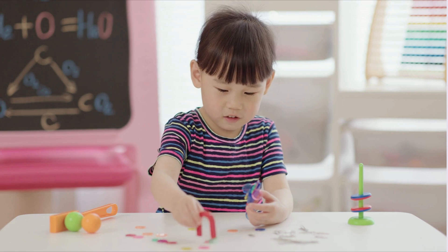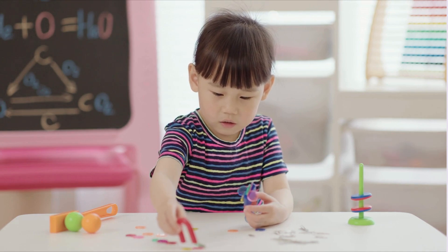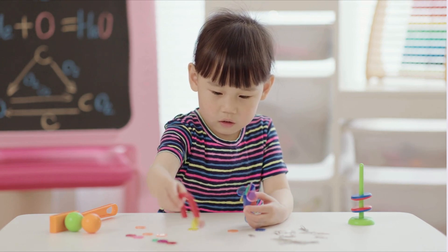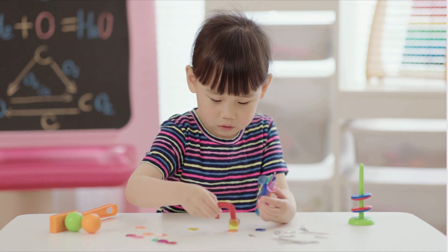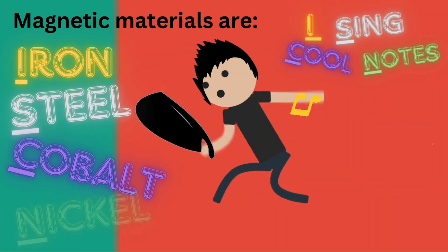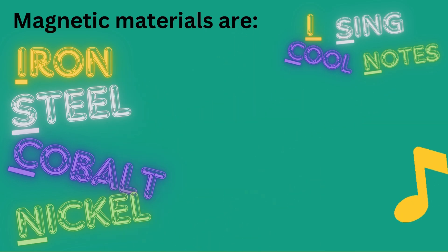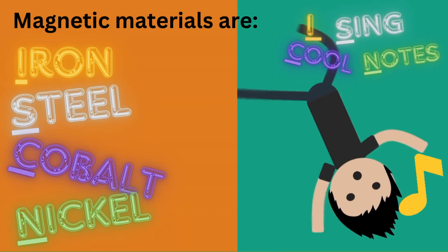Is it a magnet or a magnetic material? Can you tell? Magnetic materials are iron, steel, cobalt and nickel. I sing cool notes — remember that if you're in a pickle.